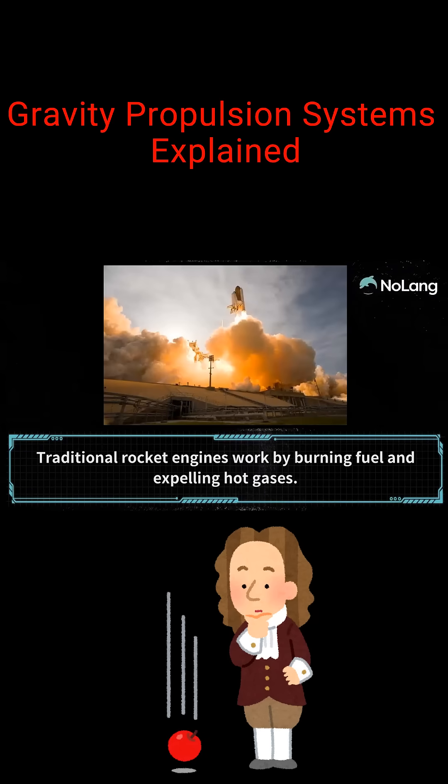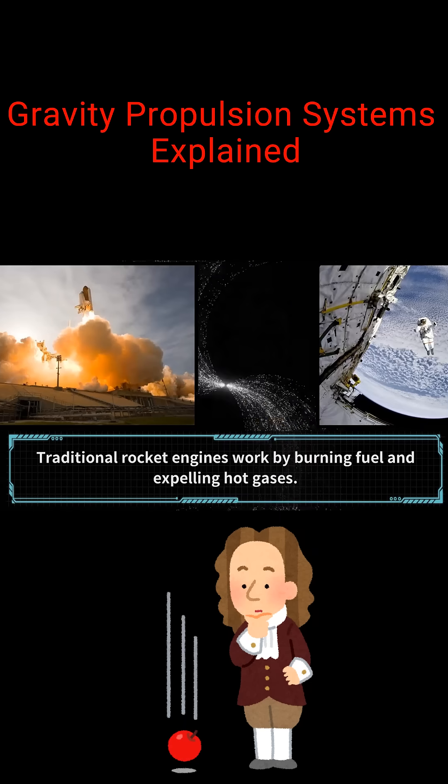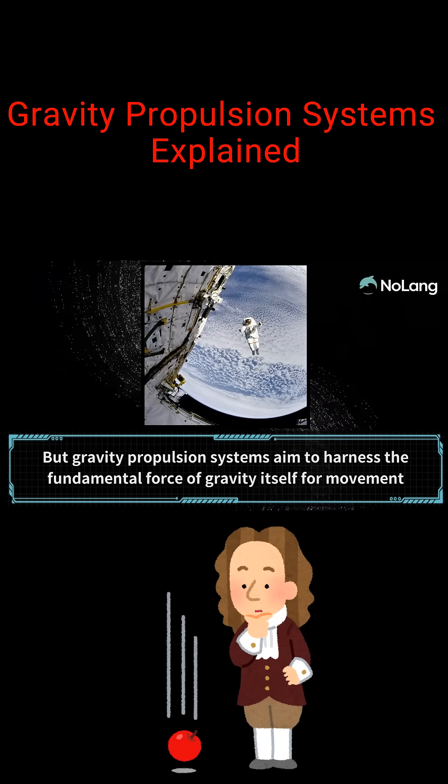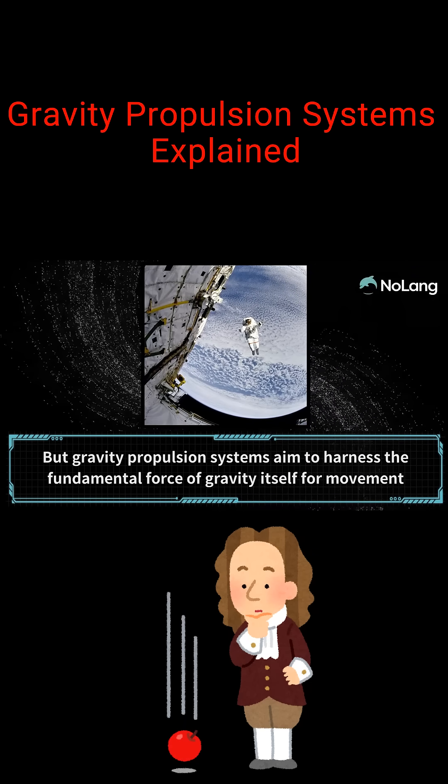Traditional rocket engines work by burning fuel and expelling hot gases. But gravity propulsion systems aim to harness the fundamental force of gravity itself for movement through space.